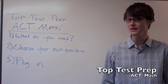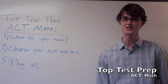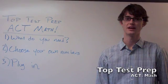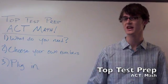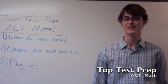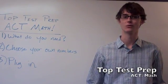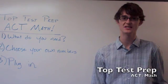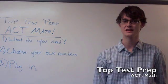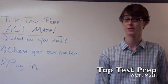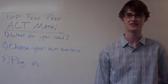Finally, a strategy that may be even better than picking your own numbers is just plugging in from the answer choices. This is applicable when the answer is in the form of actual numbers. Instead of picking your own numbers for abstract variables, you can plug them in right from the answer choices — so the test has essentially done a lot of the work for you. This can make very complicated algebra problems a lot easier and save you a lot of time and stress while you're taking the ACT math section.